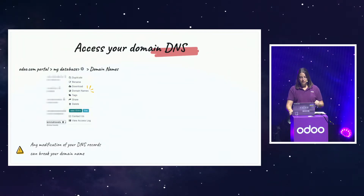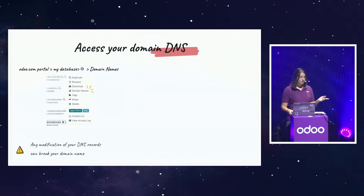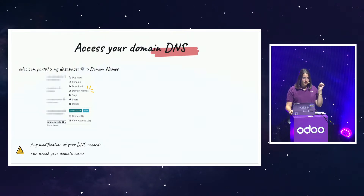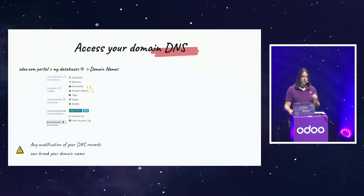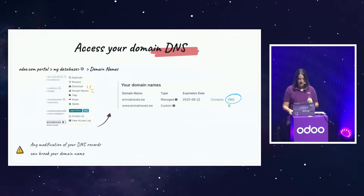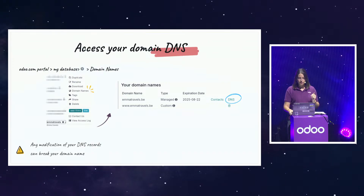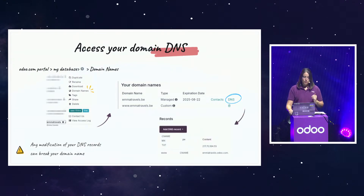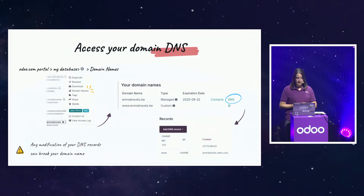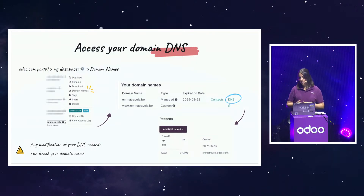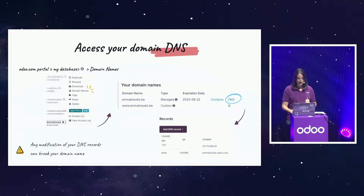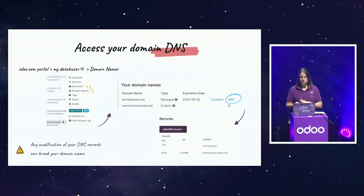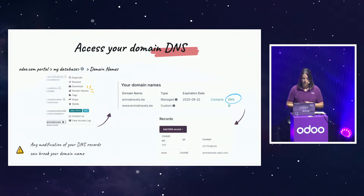Once the domain is registered, you can access your DNS panel to handle your DNS records. Just connect to your odoo.com portal, go to My Databases, the action menu, and then Domain Names. You need admin rights to access this panel. You will see your subdomain and the naked domain listed. You can access the DNS panel by clicking on DNS. You are limited in the type of records you can add, but you can add CNAME records, MX records, and TXT records — and you don't need anything else to properly use your domain. When you arrive at your DNS panel, the naked domain and the subdomain are there by default. If they're not, contact support for help.